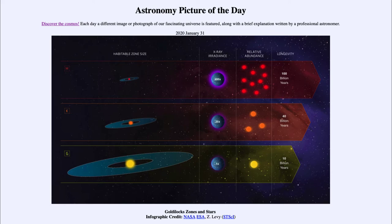is titled Goldilocks Zones and Stars. So what do we see here? Well, this is a little graphic to demonstrate some of the properties of stars and how they would be useful for life.